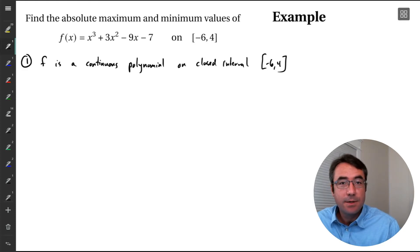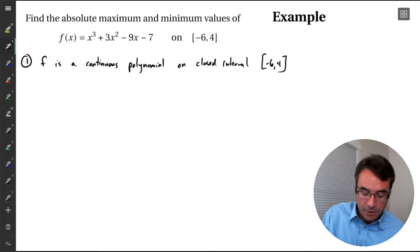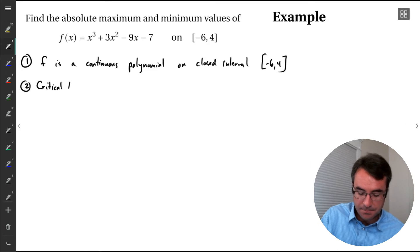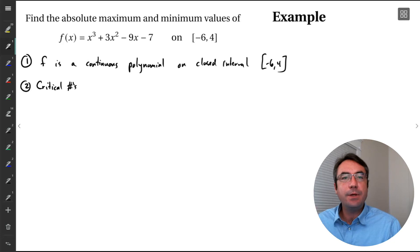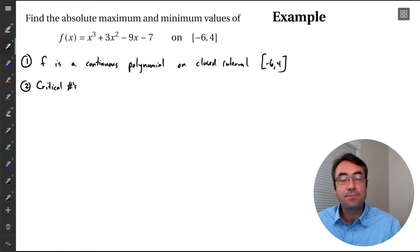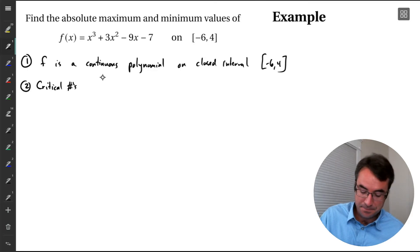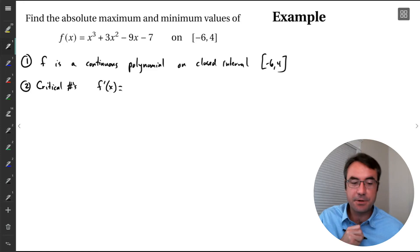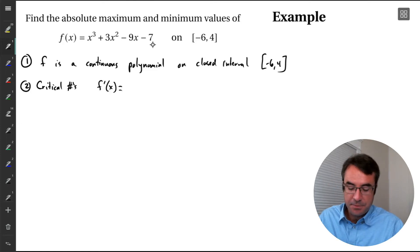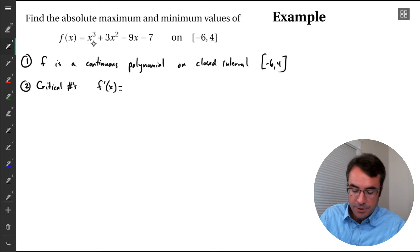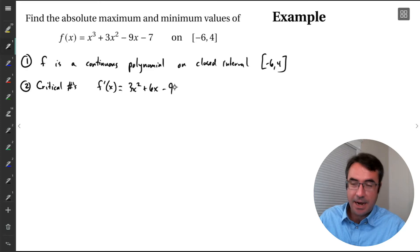The theorem doesn't tell us where to look, so that's where we start investigating the critical numbers and the endpoints. The next step for our closed interval method is to figure out the critical numbers of our function — where our derivative is either zero or undefined. Let's calculate our derivative: differentiating term by term, we get 3x squared plus 6x minus 9.